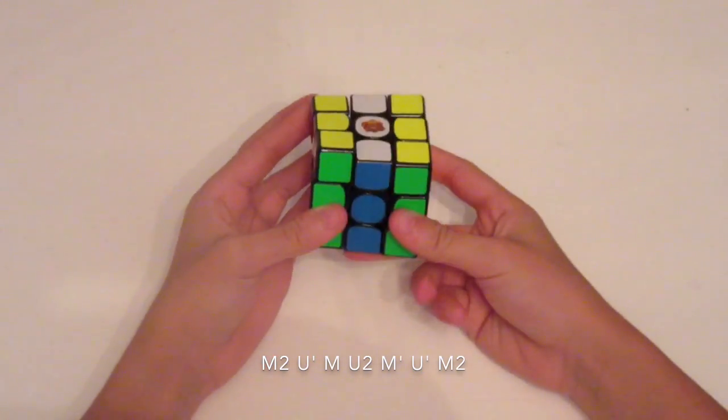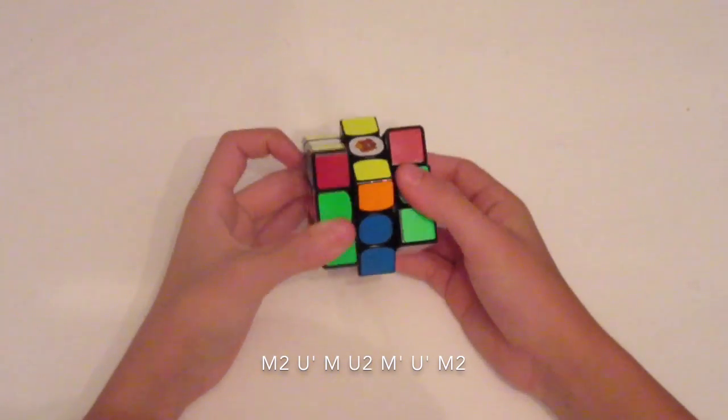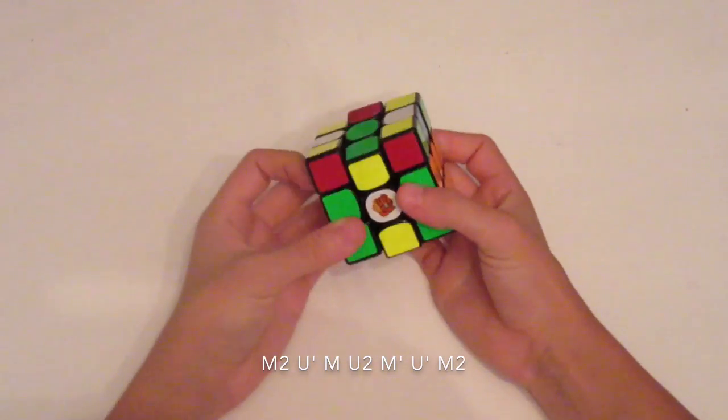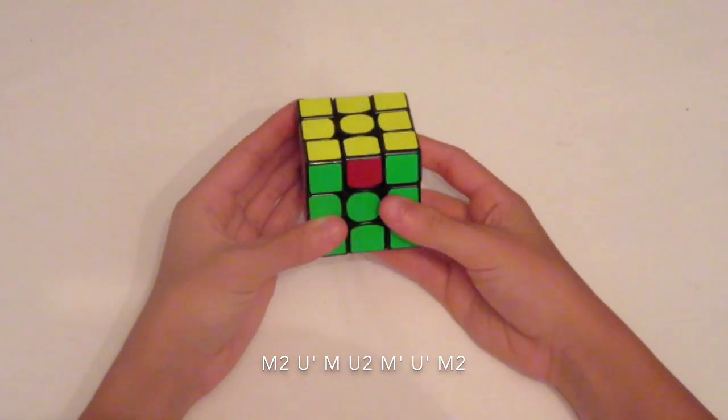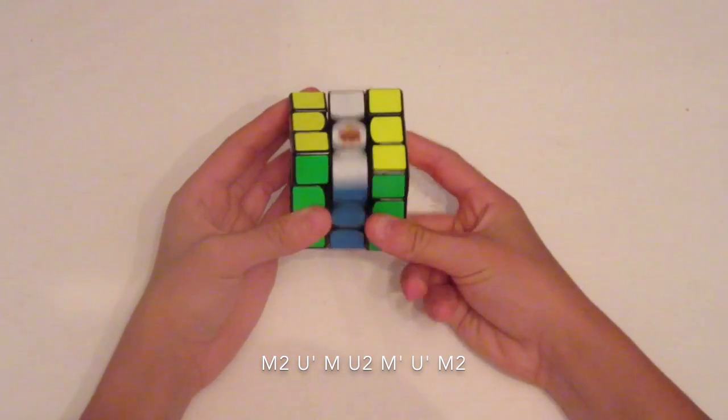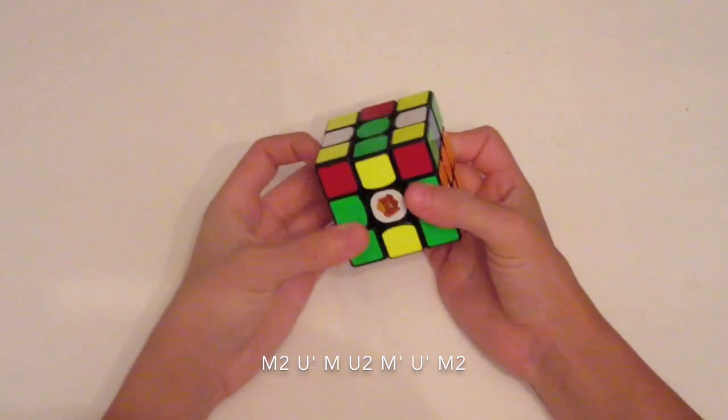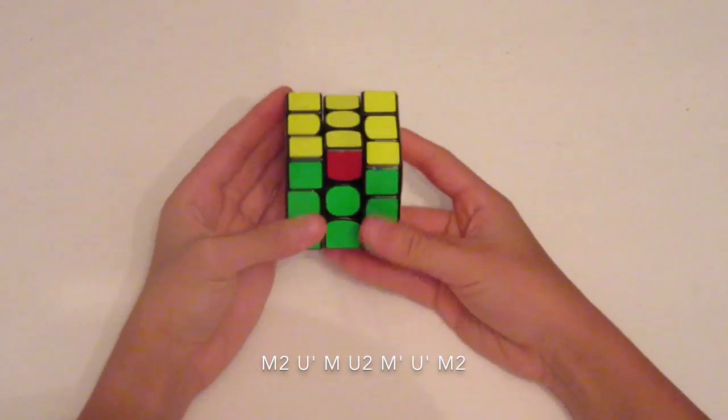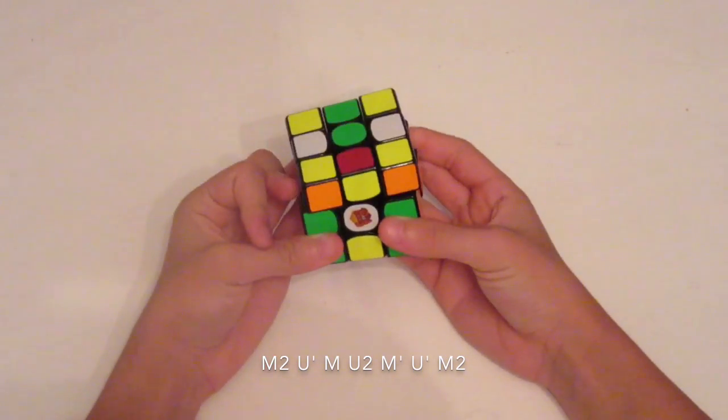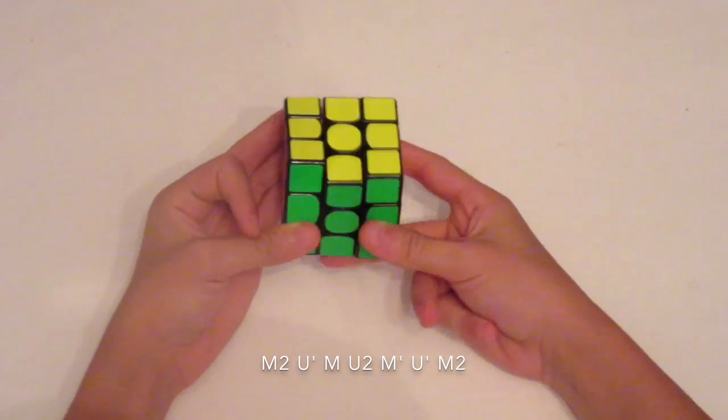Like that. So I'll show you that one more time. Like that. So that's the tricky part. But if you practice it enough, you'll get the hang of it. So M2, U-prime, M, and then U2, M-prime, U-prime, M2.